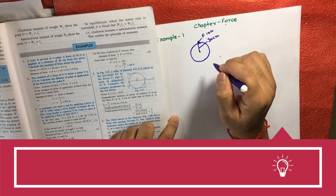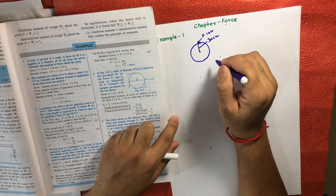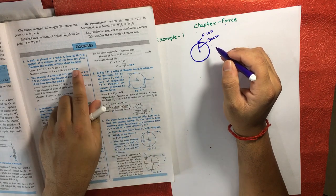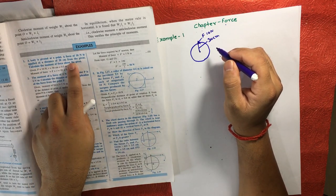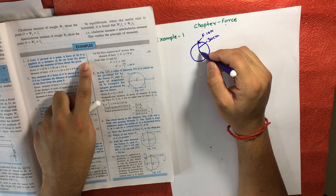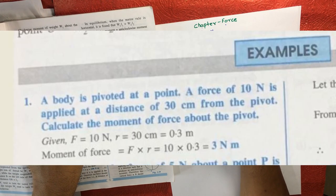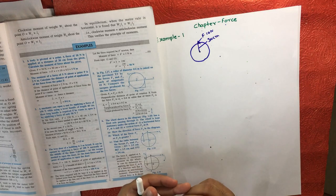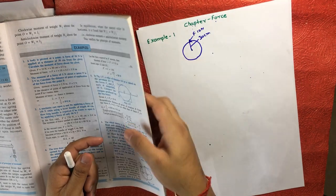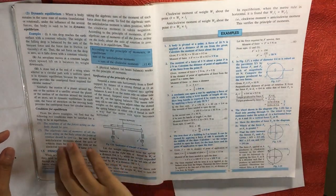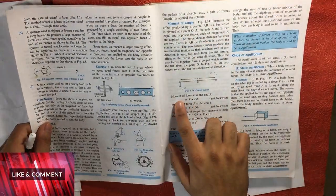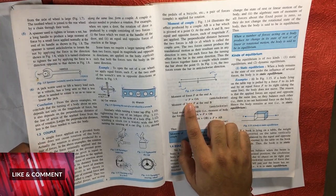There is a trick in this example, that's why I am explaining it. The question says: a force of 10 Newton is applied at a distance of 30 centimeter from the pivot — calculate the moment of force about the pivot. Now you must know the formula. I will show you — it is already written in the book. The formula is: moment of force F is equal to force into distance.